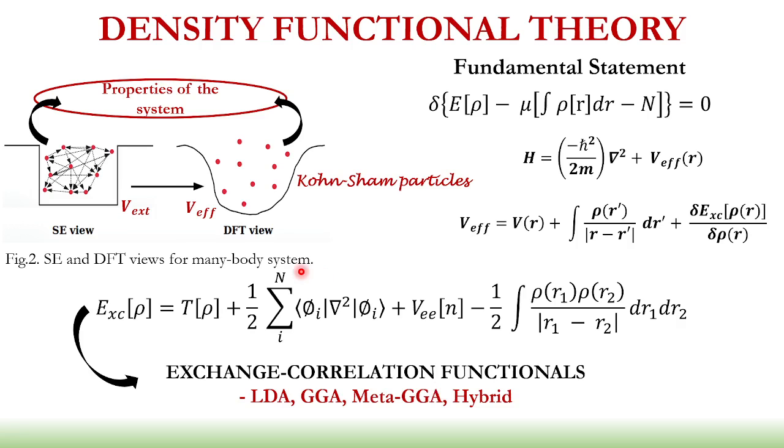Now, the Hohenberg and Kohn theorems actually lead to a fundamental statement, which says that the ground state energy and density correspond to the minimum of some functional, subject to the constraint that the density contains the correct number of electrons.